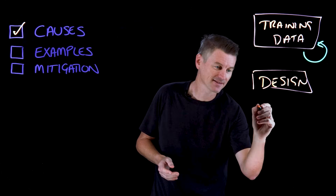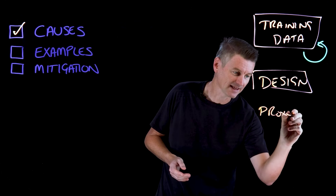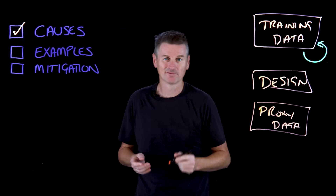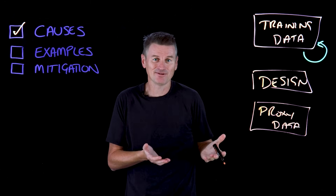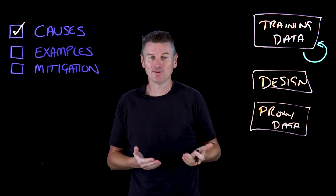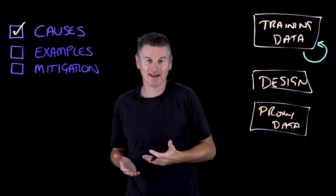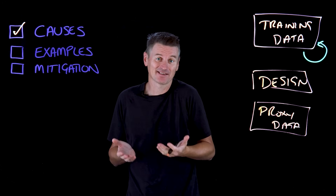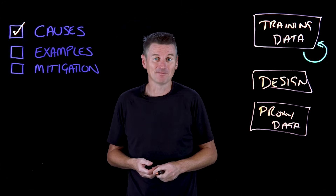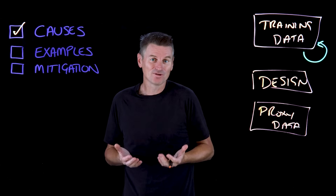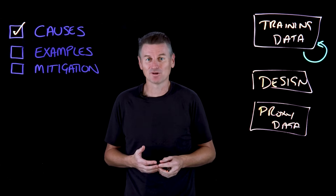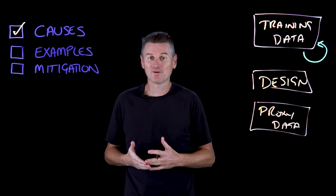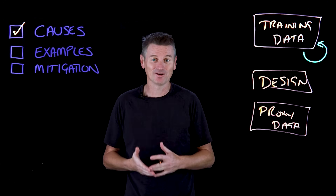We can also have biases in proxy data — data used as a stand-in for attributes not available in the ground truth data, such as race or gender, because they're in some way protected or just plain unavailable. For example, zip codes often serve as proxies for socioeconomic status, which might unfairly disadvantage particular demographic groups when evaluating applications or opportunities.